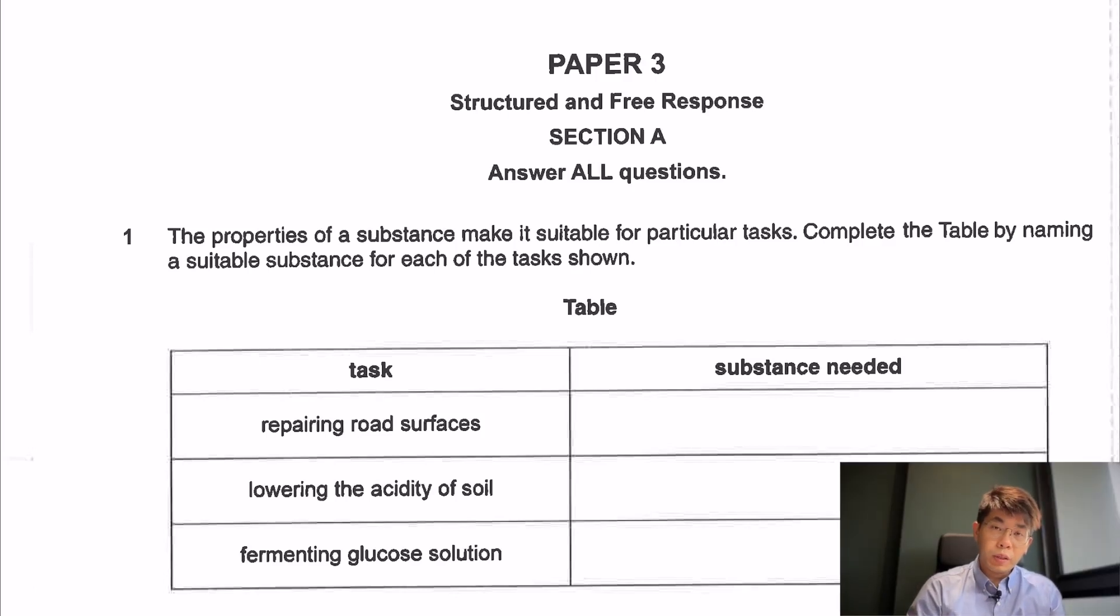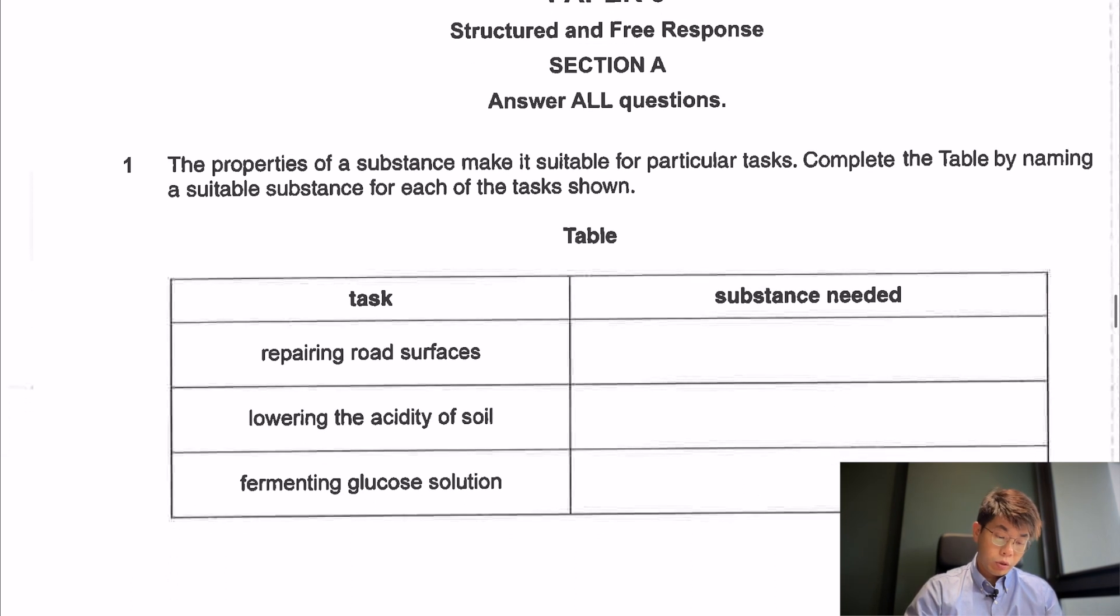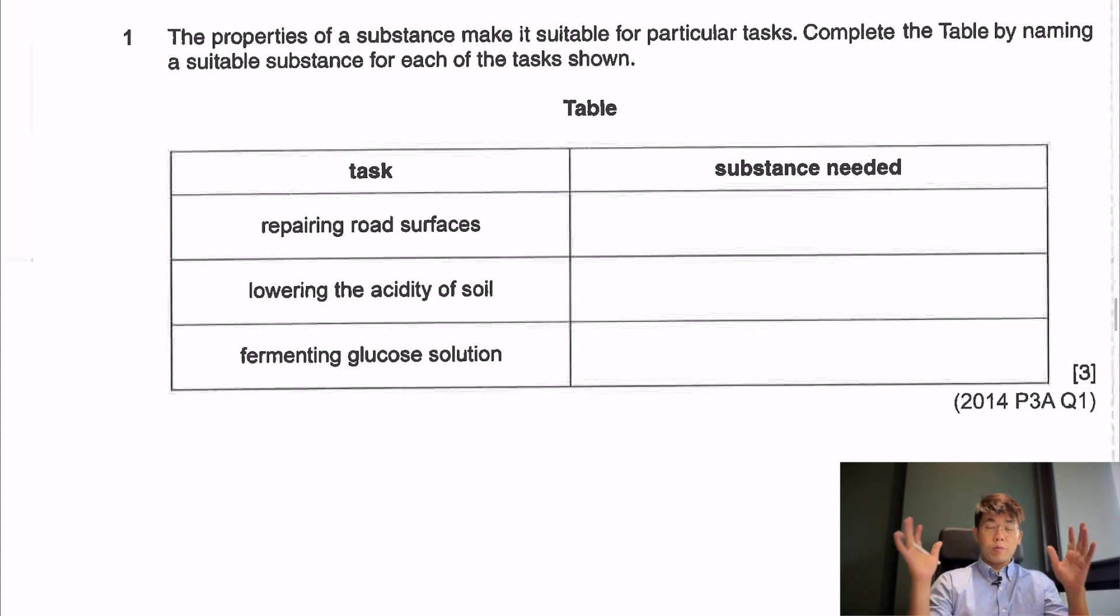Hi everyone, so today we'll be looking at organic chemistry TYS. The first question we'll be looking at is A1, section A, question number 1. So over here, the properties of a substance make it suitable for particular tasks. Complete the table by naming the substance. You need to remember all the different types of substances you have learned.